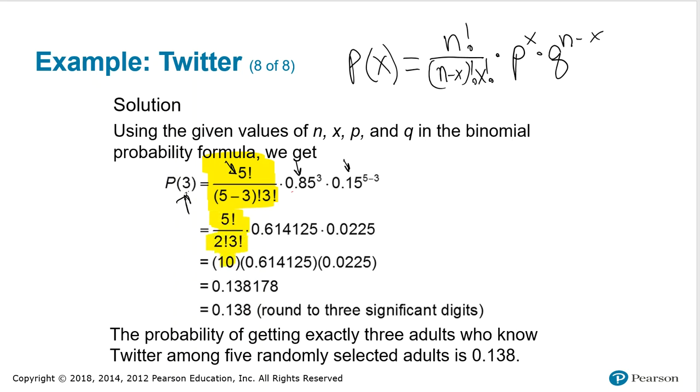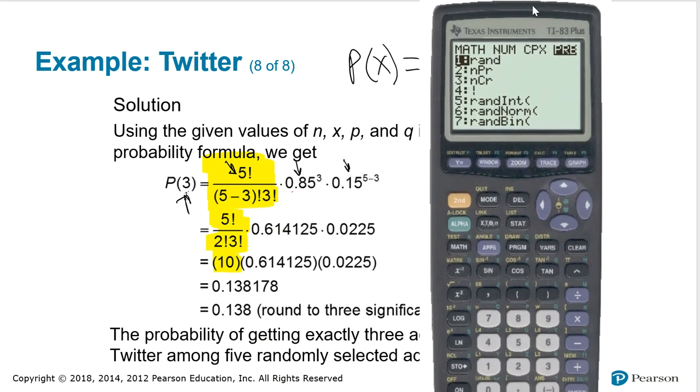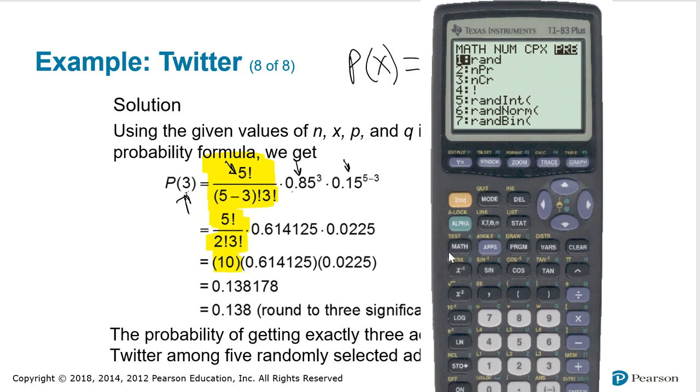You can get this number from your nCr or nCx key in your calculator without having to use that factorial key, which is the exclamation mark.